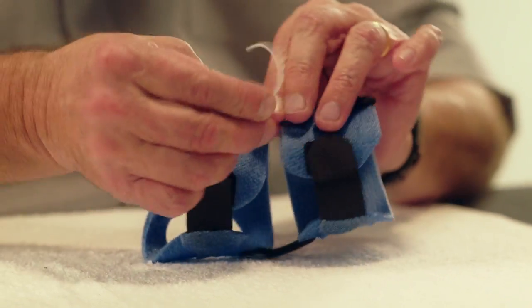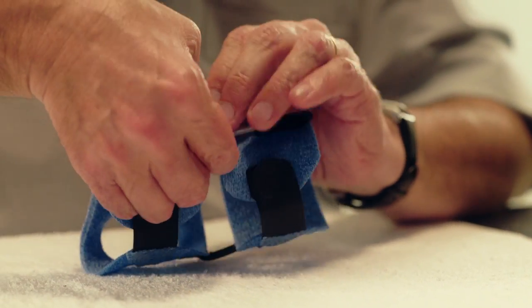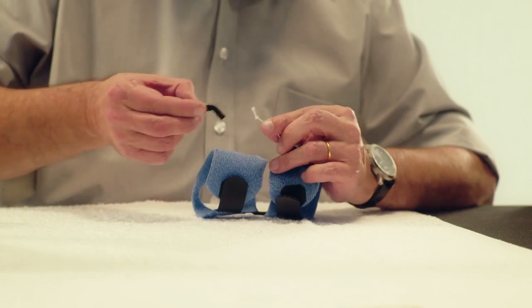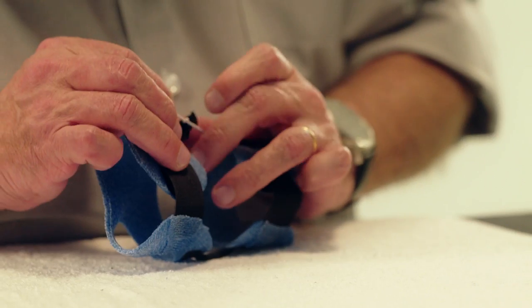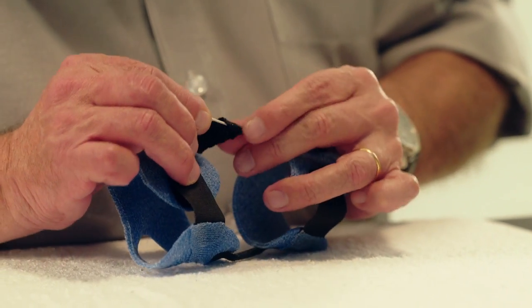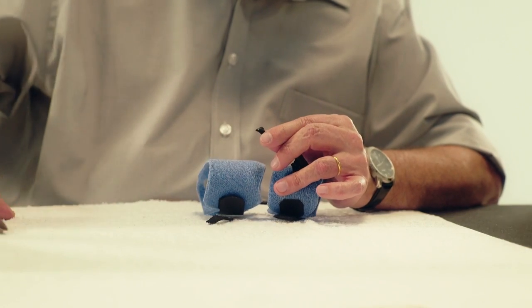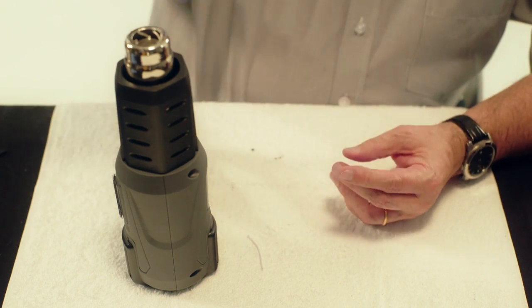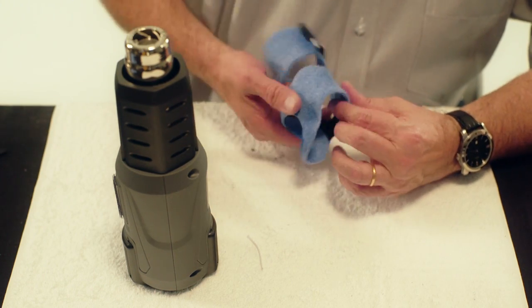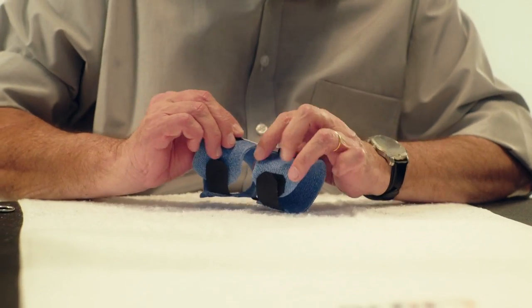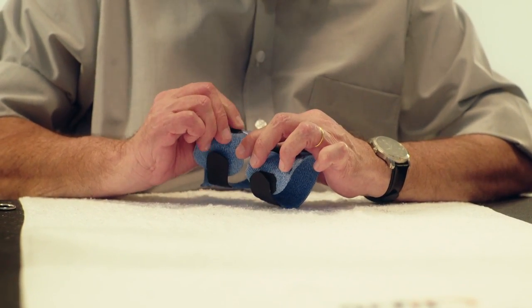Apply tension to the elastic thread and make a knot. Heat a piece of Orphicast with the heat gun and roll this over the knot to secure the knot. Heat the Orphicast protected knot with a heat gun. Stick the knot with sufficient tension onto the distal ulnar part of the orthosis.